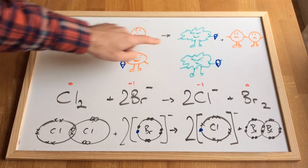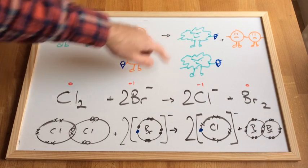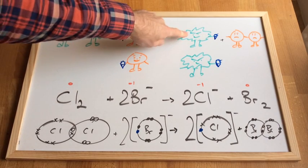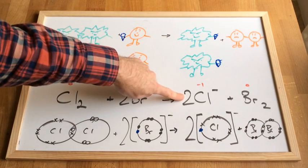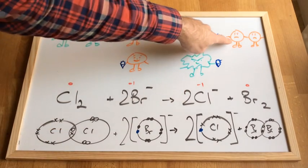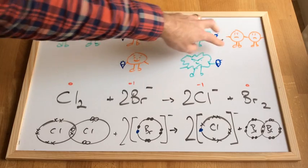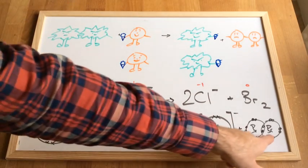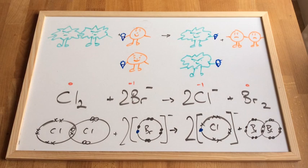You can now see the horrible looking chlorine has actually got the ice cream now. They've separated. They are now separate chloride ions with this extra electron. And the poor bromines, they've become individual Br atoms, and they pair up and form this diatomic bromine molecule instead.